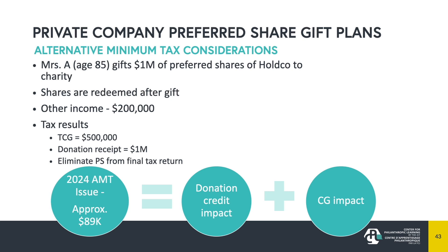We might be able to plan around the AMT exposure by running different calculations and scenarios. For example: can we trigger the capital gain in 2023 and do the donation of shares this year before the new AMT rules kick in? Can we roll assets into a company, since corporations are not subject to AMT? Are there other taxpayers in the group, such as a spouse, that we can use? Perhaps the AMT is recoverable. The takeaway is that everything is fact-specific.